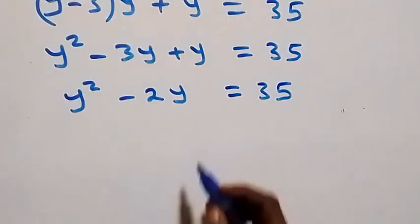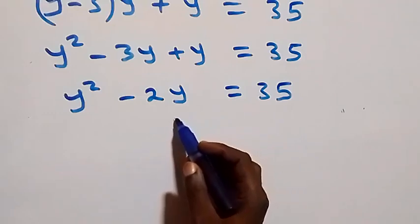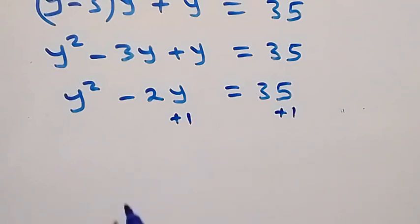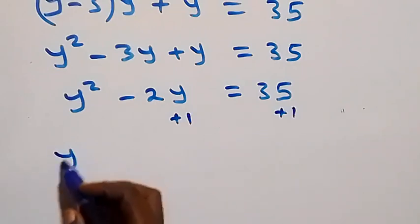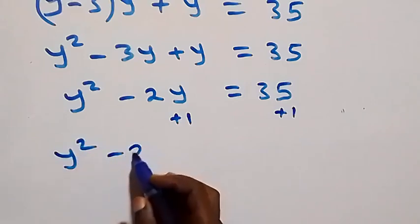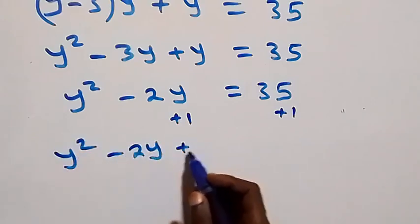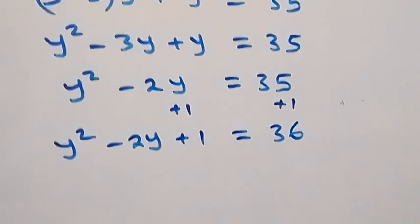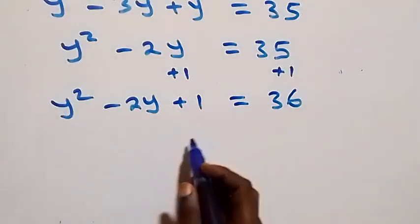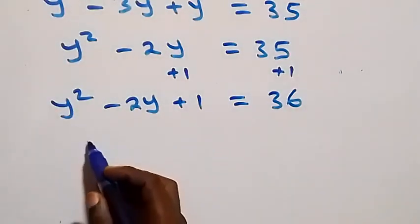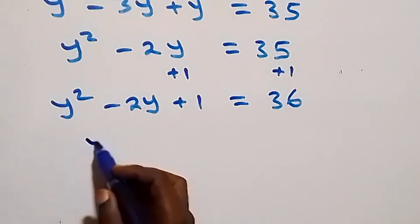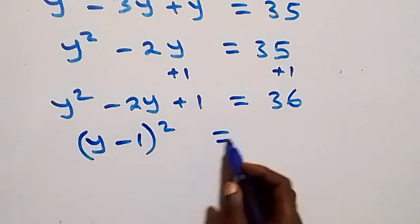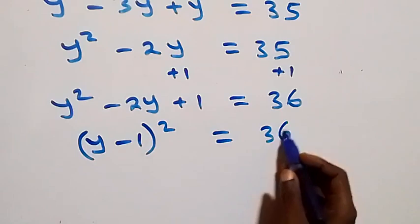We add one to both sides: y squared minus two y plus one equals 36. This is the same as (y minus one) all squared equals 36 — completing the square.